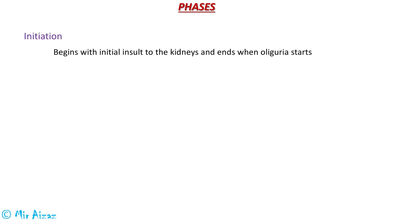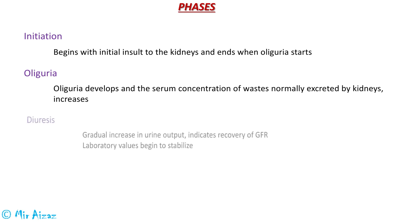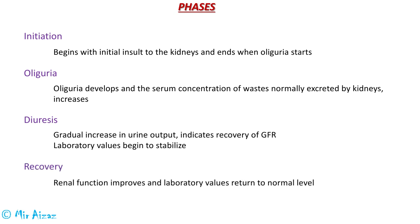The patient suffering from acute kidney injury passes through four phases. The first is the initiation phase, which begins when the initial insult occurs to the kidneys and ends when the oliguric stage starts. In the oliguric stage, urine output decreases to approximately 400 ml, leading to concentration of waste materials in the blood. The third is the diuresis stage, where GFR and urine output gradually increase and laboratory values begin to stabilize. In the recovery stage, renal function returns to normal and laboratory values return to previous normal levels.